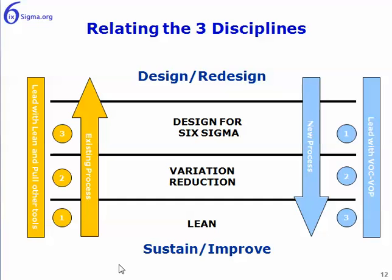Let's look at how the three disciplines of Six Sigma interact with one another. When you've got an existing process, you want to lead with the lean tools — that's step one. Employ the lean tools, and this will remove the waste from the process. Once you've removed the waste, that will expose the variation, so you'll go to the second set of tools, which is the variation reduction tools.